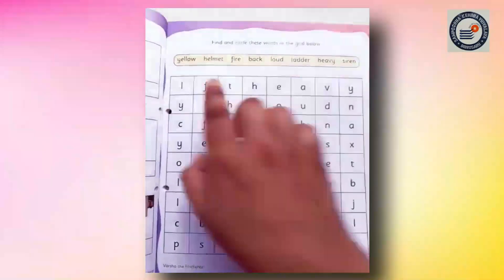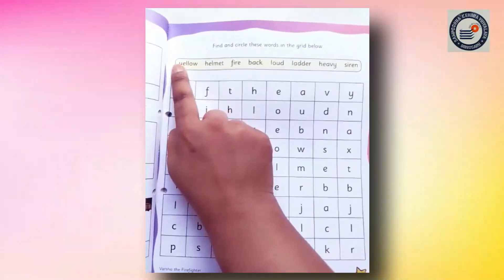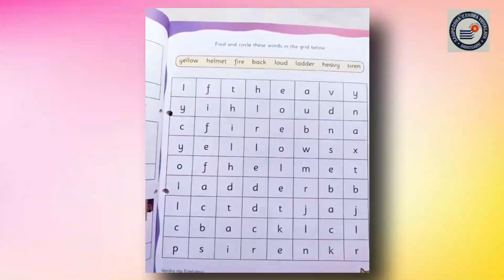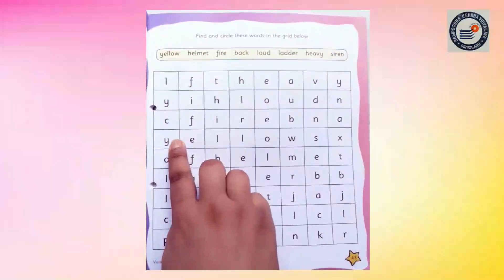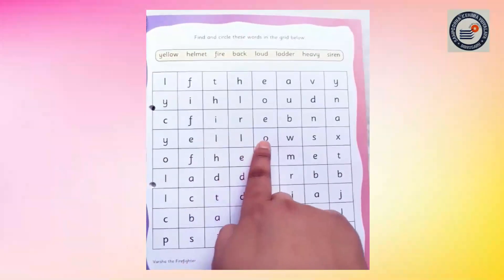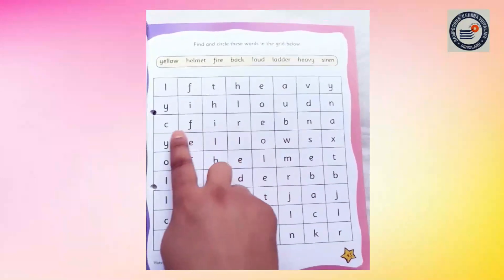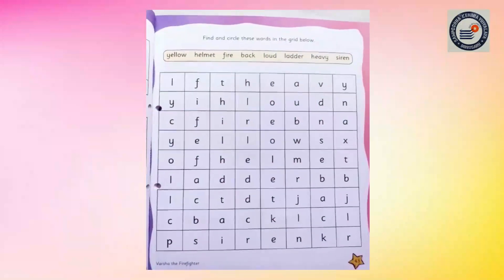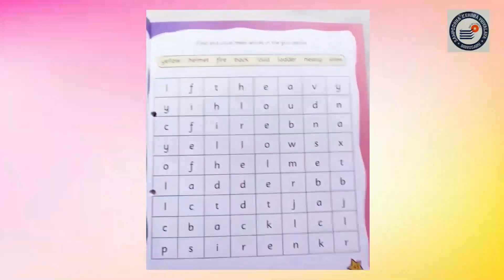I will show you one. Which word is this? Yellow — Y-E-L-L-O-W. Can you find the word here? Y-E-L-L-O-W. Yellow. Now, you have to circle this with the help of your pencil. And the rest is your home fun activity.